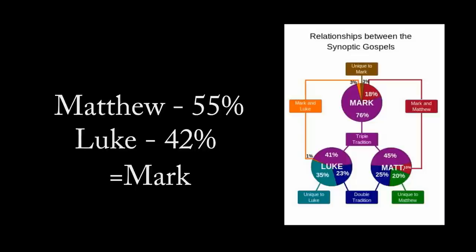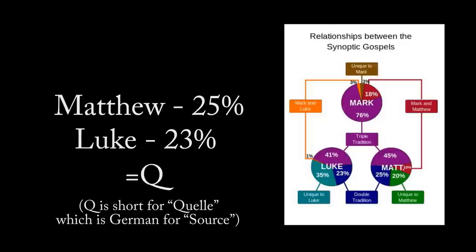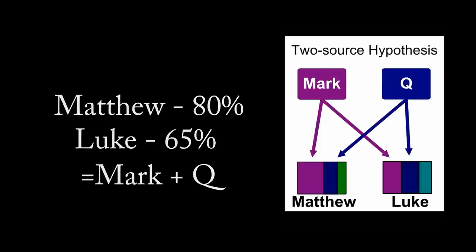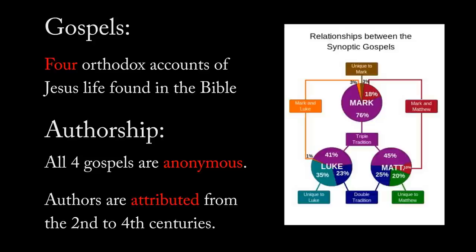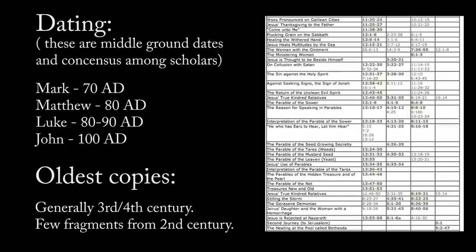Matthew and Luke share another source which Mark does not contain — scholars refer to this as the Q text. Q represents another 25% of Matthew and 23% of Luke. In total, this means 80% of Matthew and 65% of Luke is derived word for word from these two sources. The Gospels were assemblies of other accounts, with only small percentages unique to any single source. And given how many first century accounts are lost, they likely shared these unique traditions with other long-lost passages.